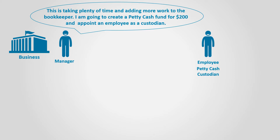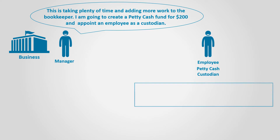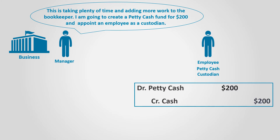The management will establish the fund by paying, let's say, $200 to the Petty Cash Fund custodian. The Petty Cash Fund is debited and the cash is credited for that amount. The Petty Cash Fund is still an asset account and that's why it is debited.